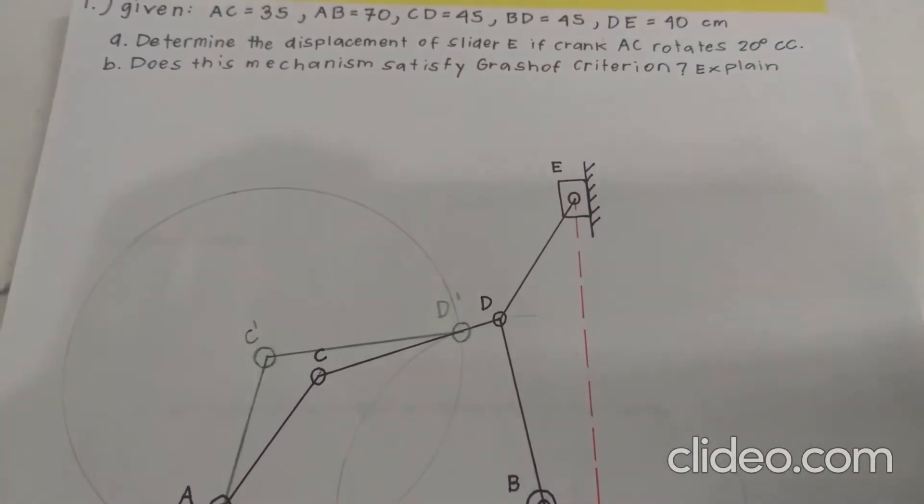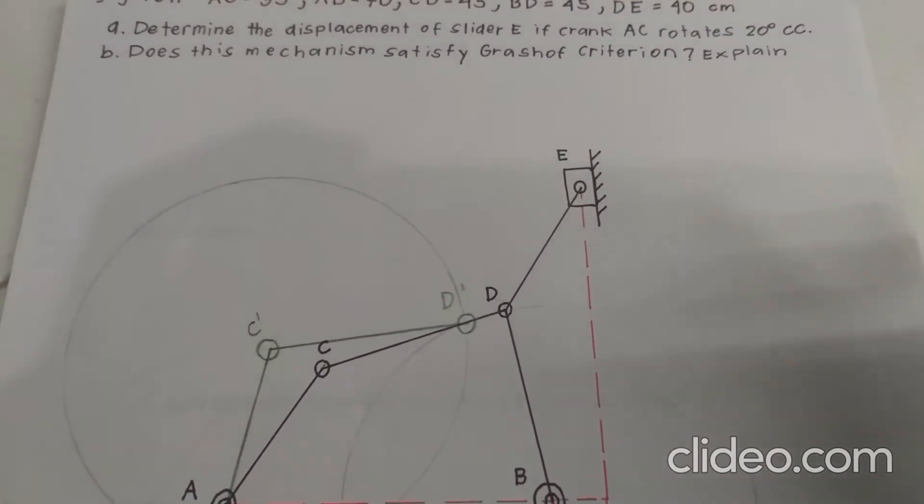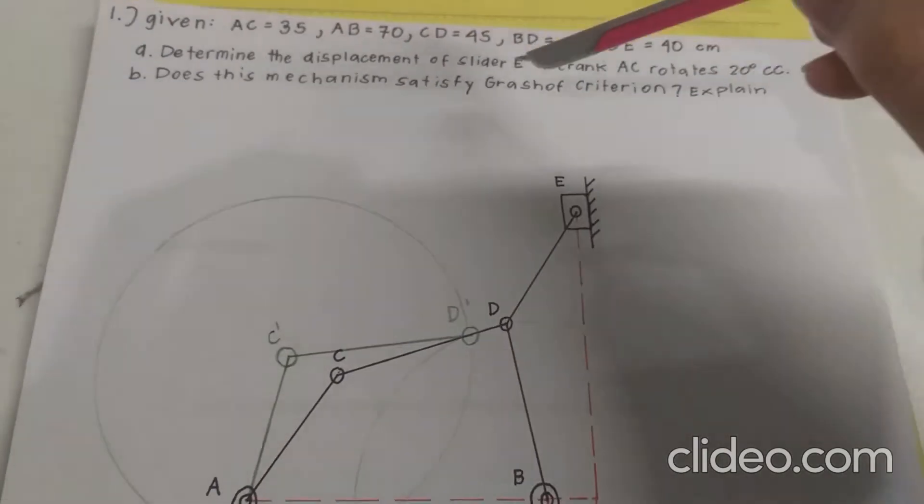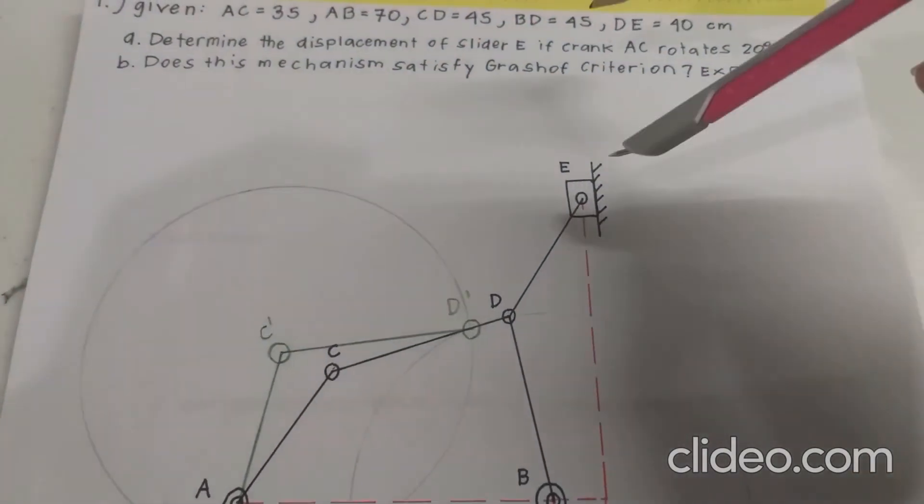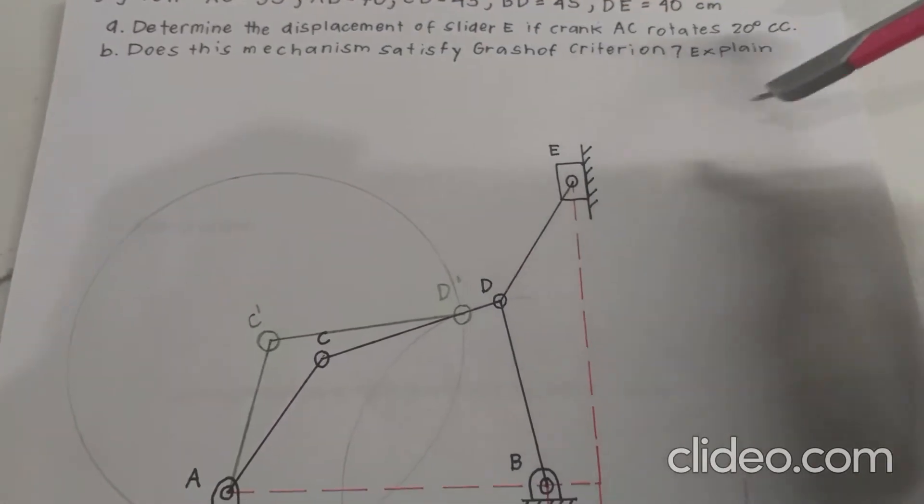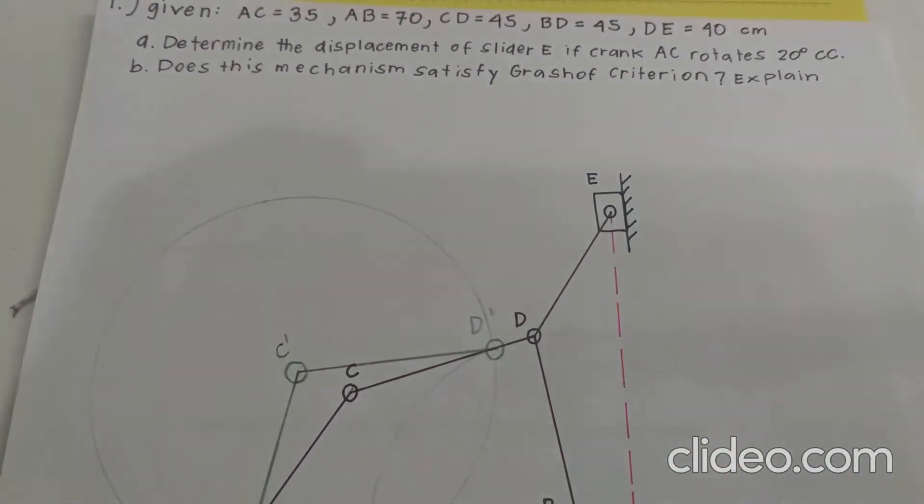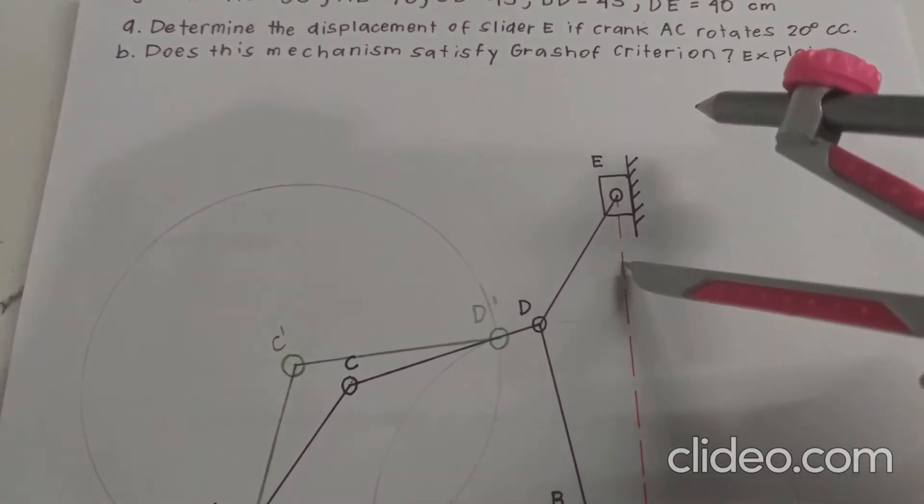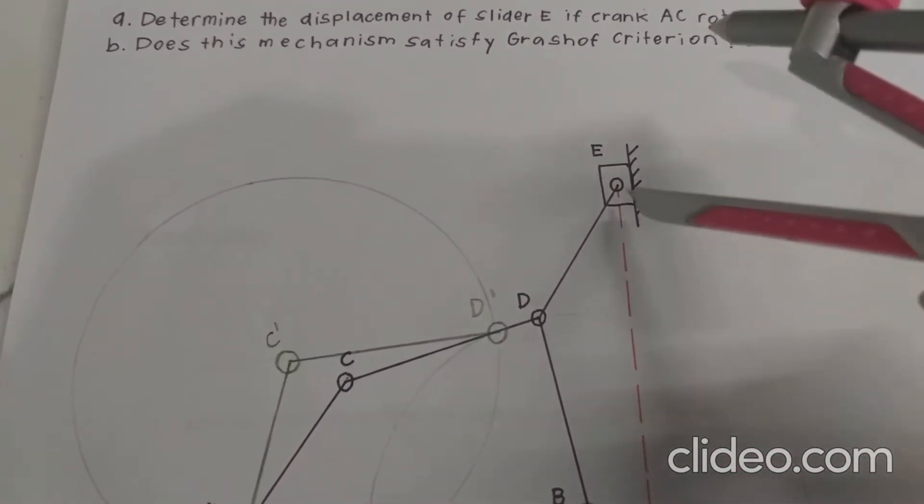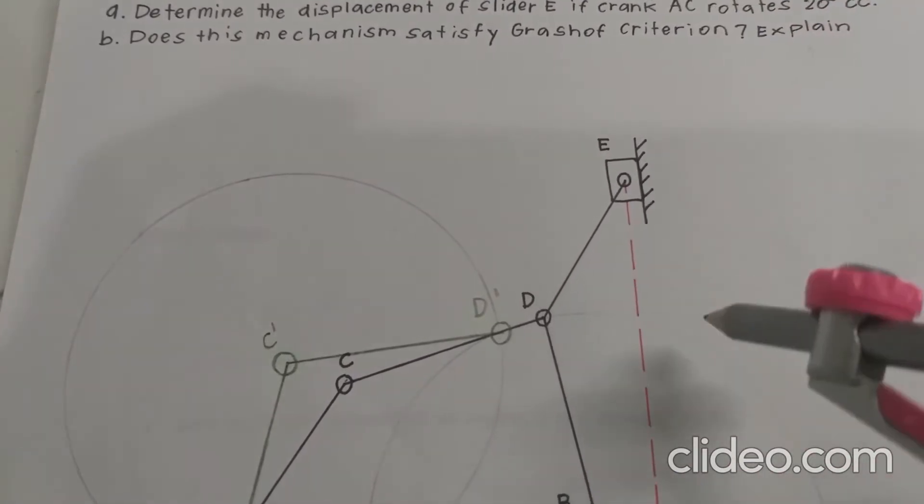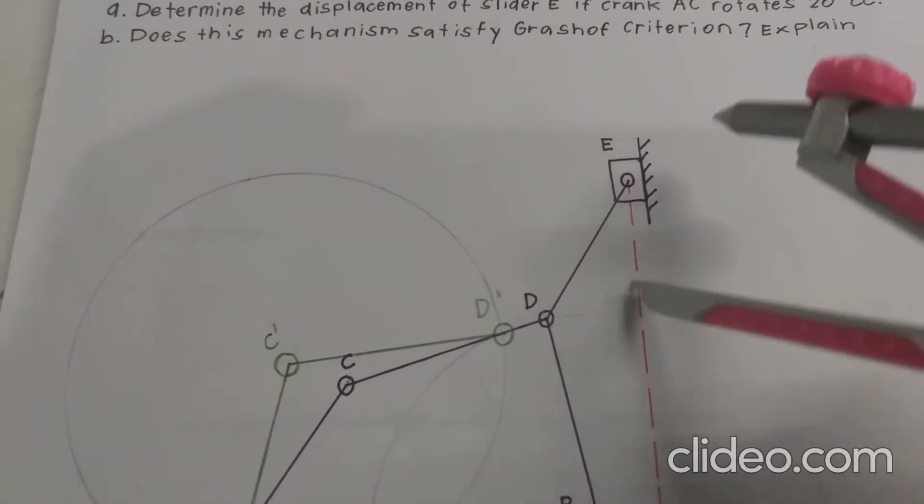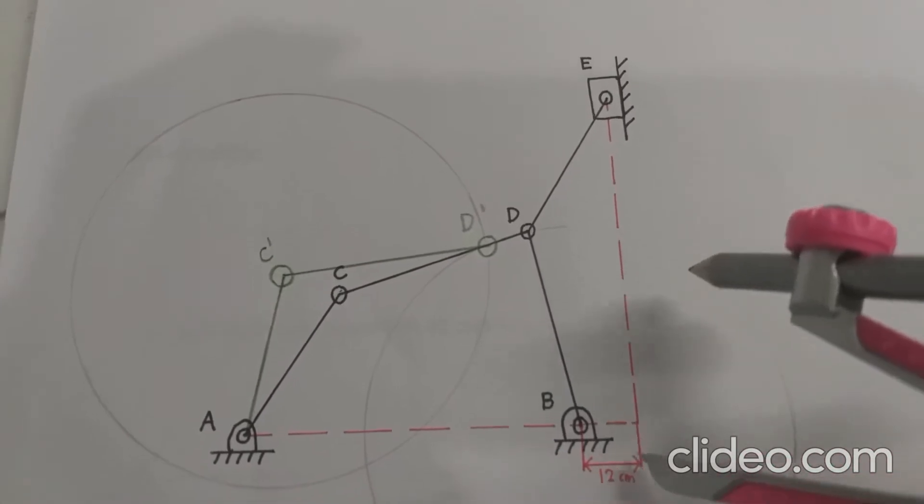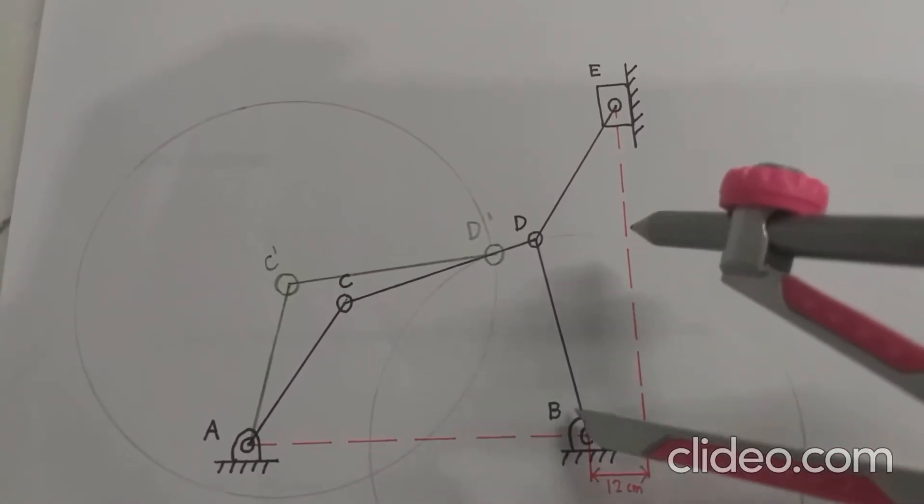We're finally going to find the displacement of slider E by making another circle, our final circle, which measures from D to E, which is 40 centimeters from point D prime. And we have to find its tangent within this line, which is 12 centimeters away from point B.